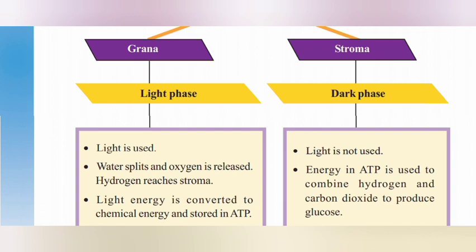The source of oxygen is water. This is the light phase — oxygen will get released from water. The oxygen from H2O is released, and the hydrogen reaches the stroma. Light energy is converted to chemical energy and stored in ATP.